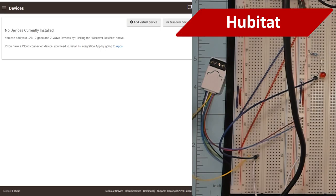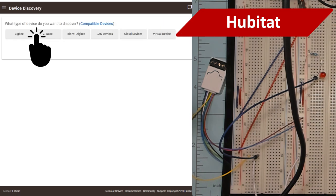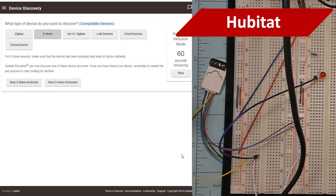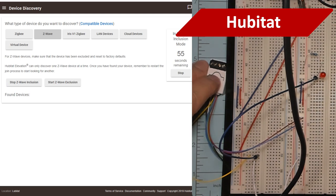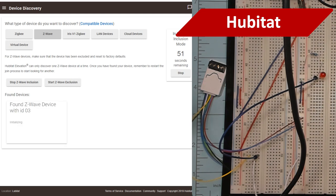Either way, you're all set. Now it's time to bring it into Hubitat. Apply power. Push that button three times. And you're in.